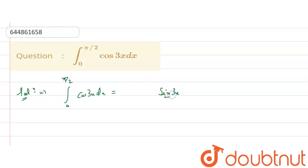Sin 3x by 3 and limits are from 0 to pi by 2. So this 1 by 3 will take outside.